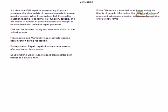Here are the conclusions. DNA repair is an extremely important process, and a wide variety of mechanisms exist to ensure genetic integrity. When these systems fail, the result is mutation leading to abnormal cell functioning, cancers, and cell death. A number of genetic diseases are associated with defective repair processes. DNA can be repaired during and after replication in the following ways: proofreading and mismatch repair correct incorrect base insertion during replication; post-replication repair addresses errors after replication is completed; and double-strand break repair fixes breaks across both strands of the double helix.